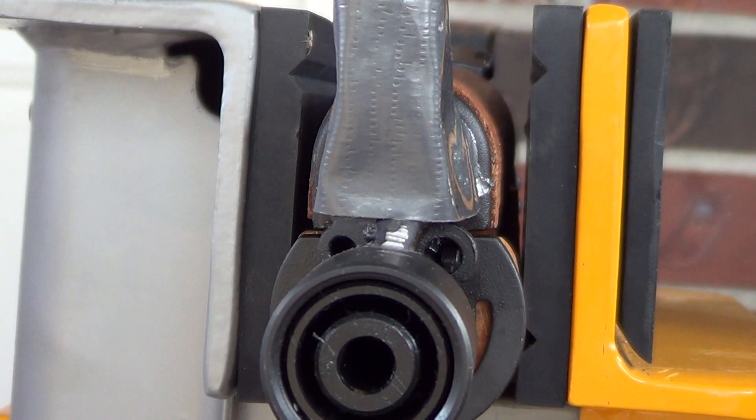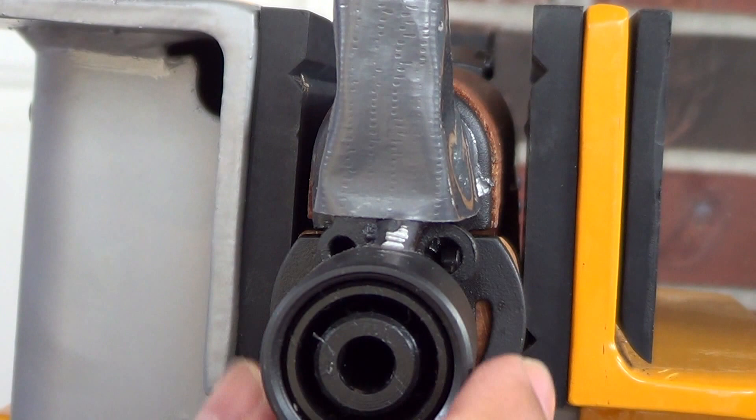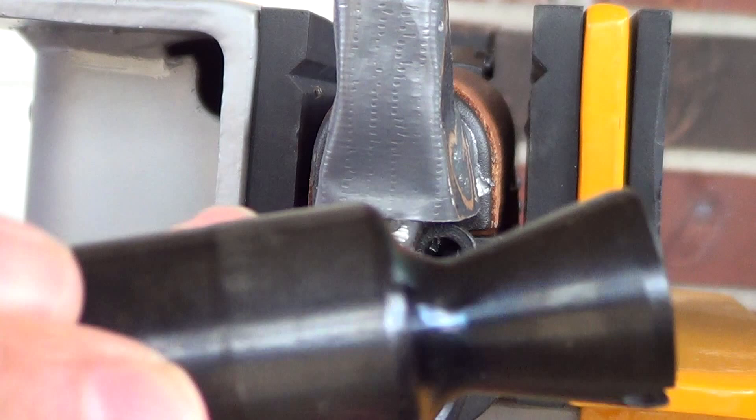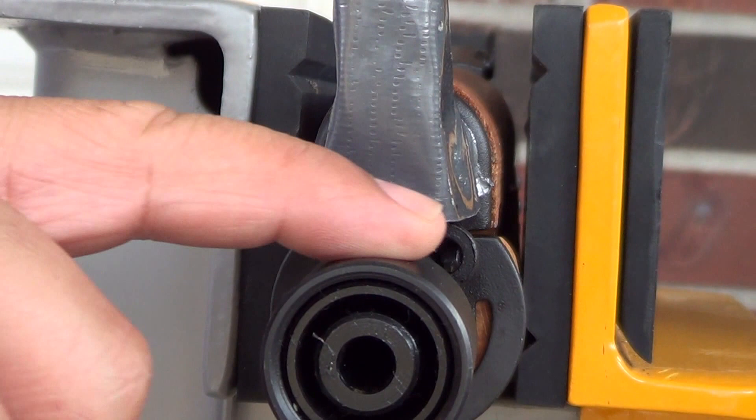Hey guys, I'm working on my AK pistol here, the Impact M92. I'm going to take off this muzzle brake they have on here and install this crank style muzzle brake and see how that turns out.